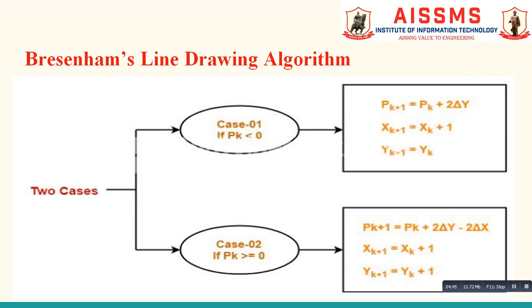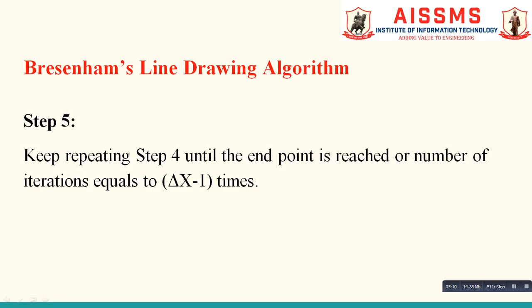When the value of pk is greater than or equal to zero, we apply the second set of formulas to calculate the next decision parameter, the x-coordinate of the next point, and the y-coordinate of the next point. The next step is to keep repeating step 4 until the end point is reached, for a number of iterations equal to delta x minus 1 times.